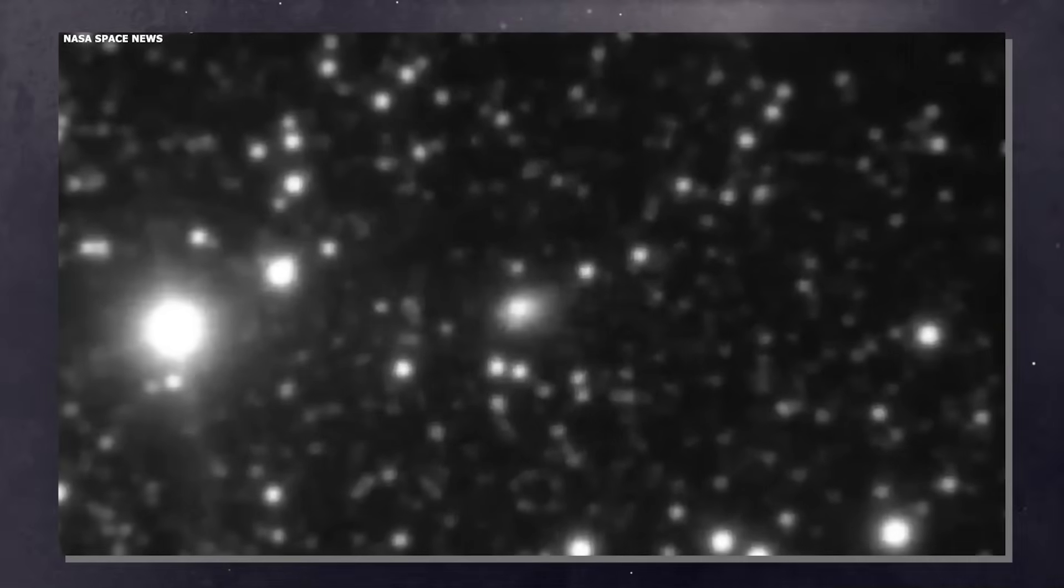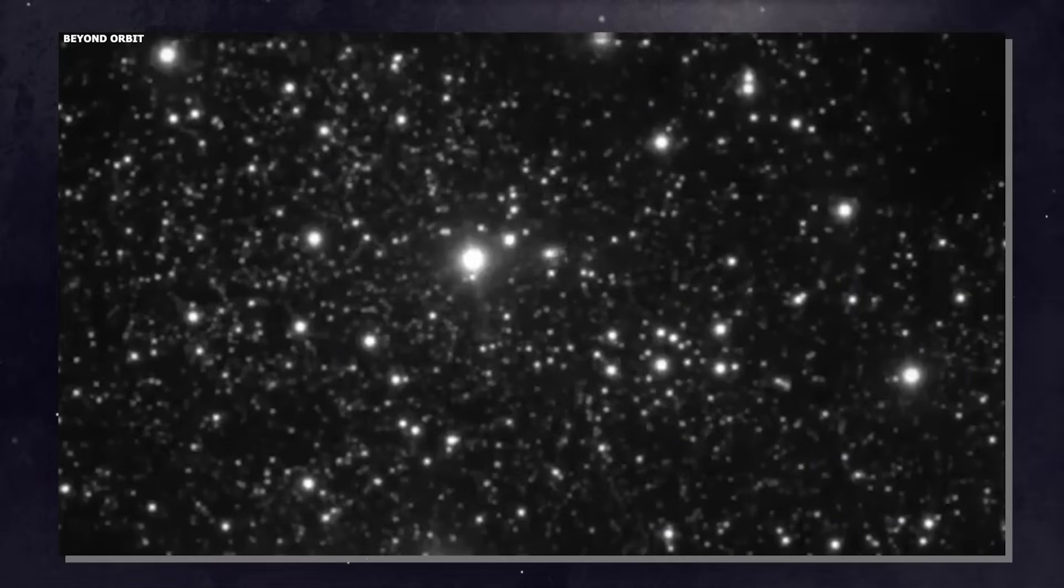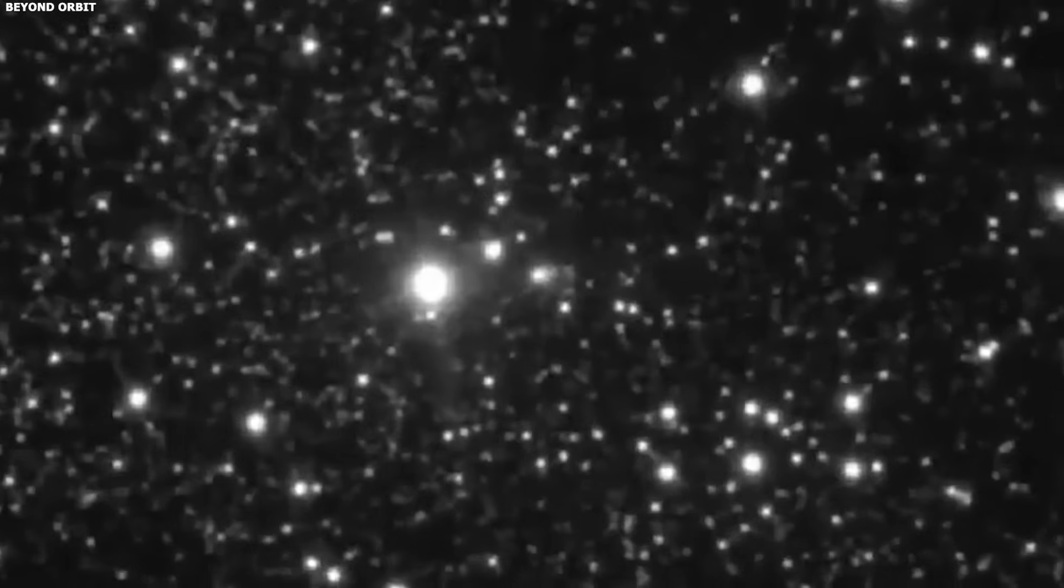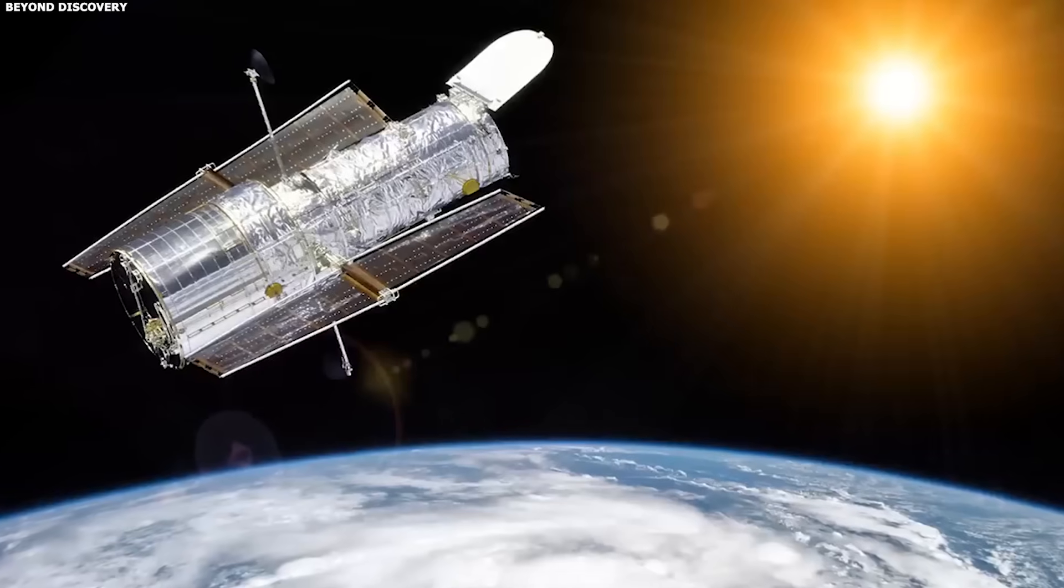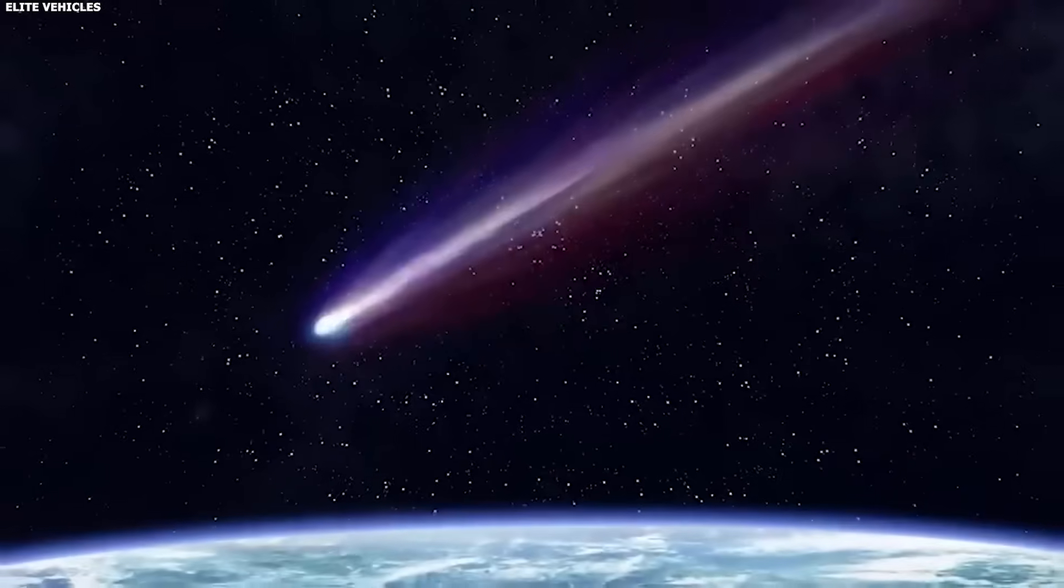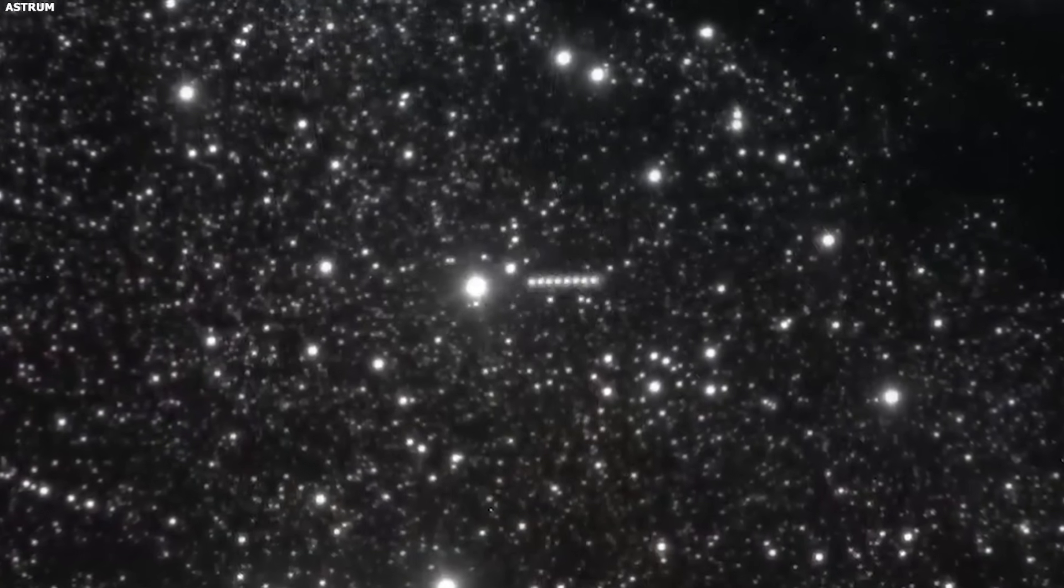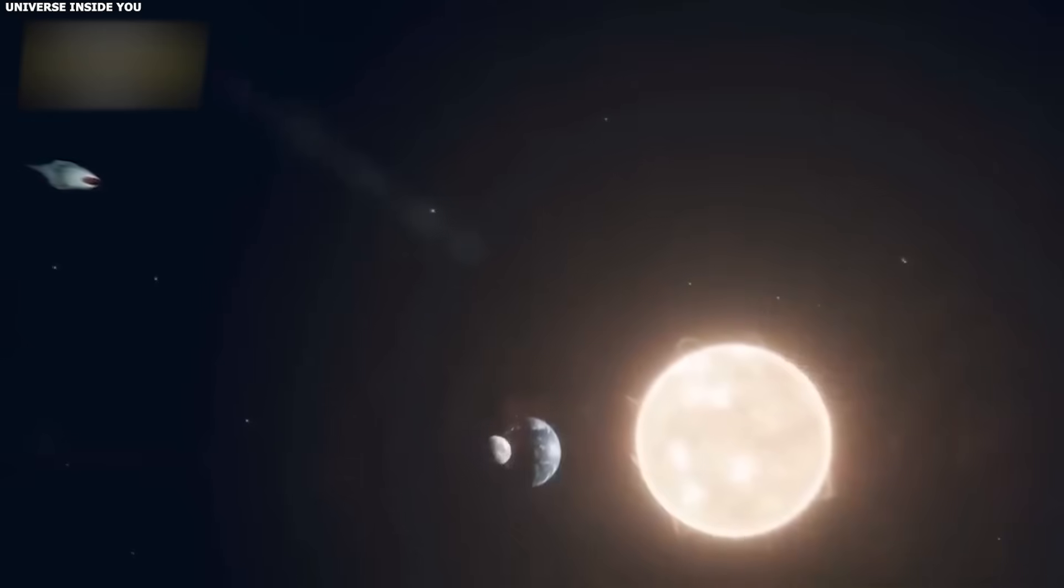Maybe the comet's rotation is flinging material sunward. Except rotation creates jets that point in all directions as the comet spins. It doesn't create a sustained structure pointing in one specific direction for five months. Maybe there's outgassing from a vent on the sun-facing side. That could create a jet pointing toward the sun. But jets from outgassing don't extend 60,000 kilometers. They're usually a few hundred to a few thousand kilometers at most. And they change as the comet rotates and as different parts of the surface heat up. This anti-tail has been remarkably stable. Same direction. Same approximate length. Same brightness profile. For five months.